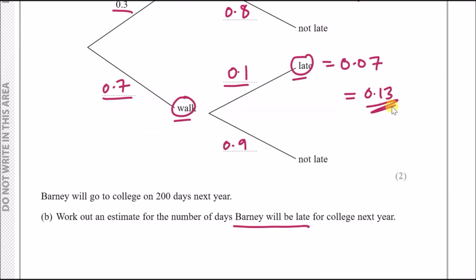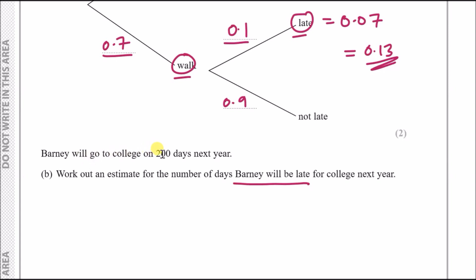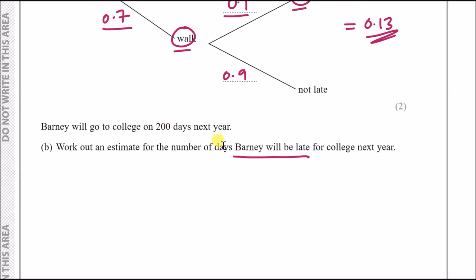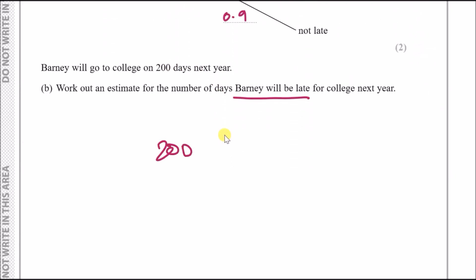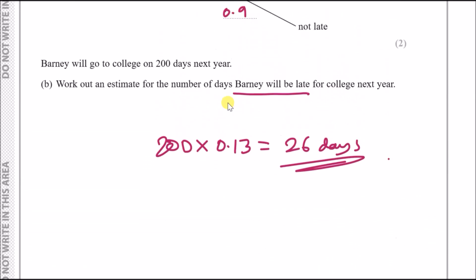With a probability of 0.13 of being late on any given day, over 200 days we estimate 0.13 × 200 = 26 days that Barney will be late for college. That completes the tree diagram question.